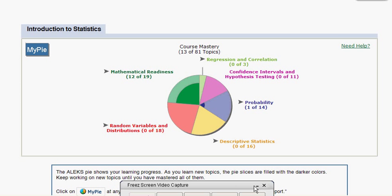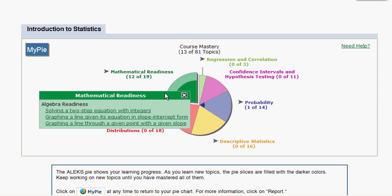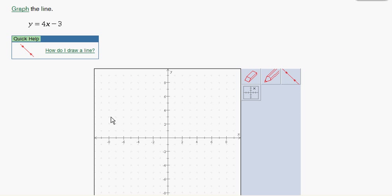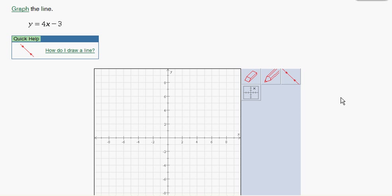In this section we will be looking at graphing a line given its equation in slope-intercept form. As we take a look at our problem, we can see that we have the equation y equals 4x minus 3.